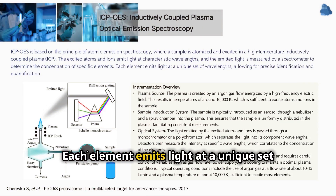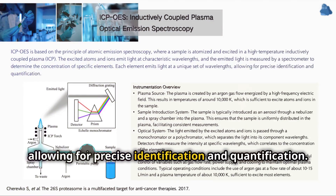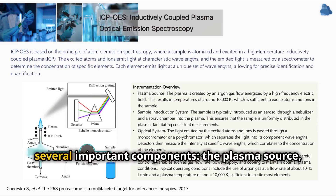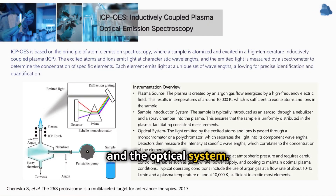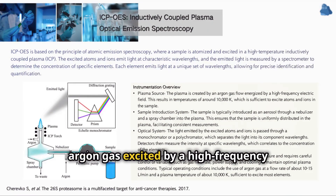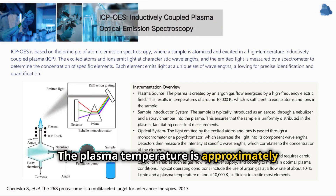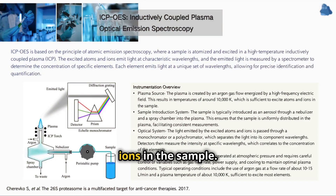Each element emits light at a unique set of wavelengths, allowing for precise identification and quantification. The ICP-OES instrument consists of several important components: the plasma source, the sample introduction system, and the optical system. The plasma is generated by a stream of argon gas excited by a high-frequency electric field. The plasma temperature is approximately 10,000 K, which is sufficient to excite atoms and ions in the sample.